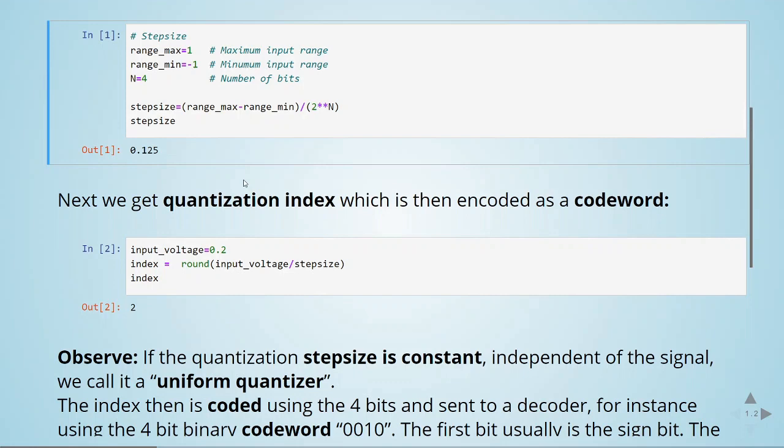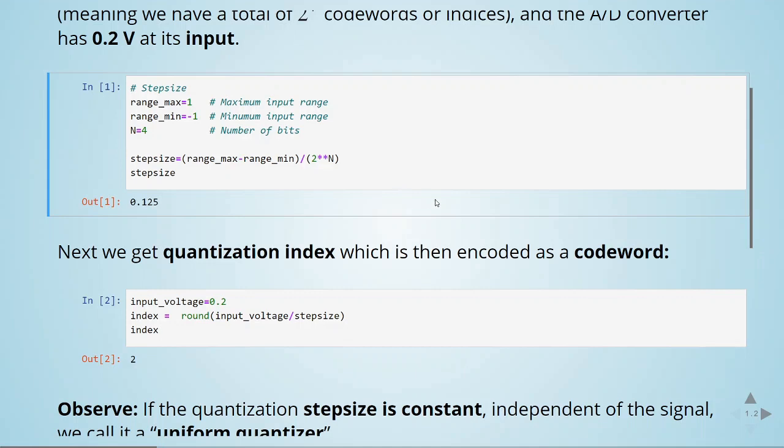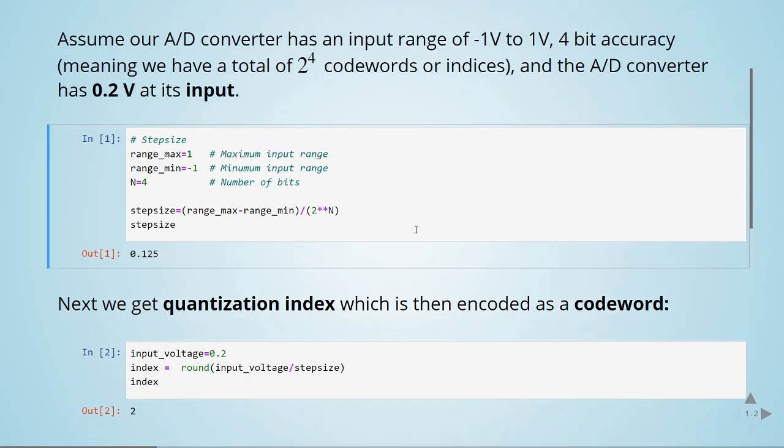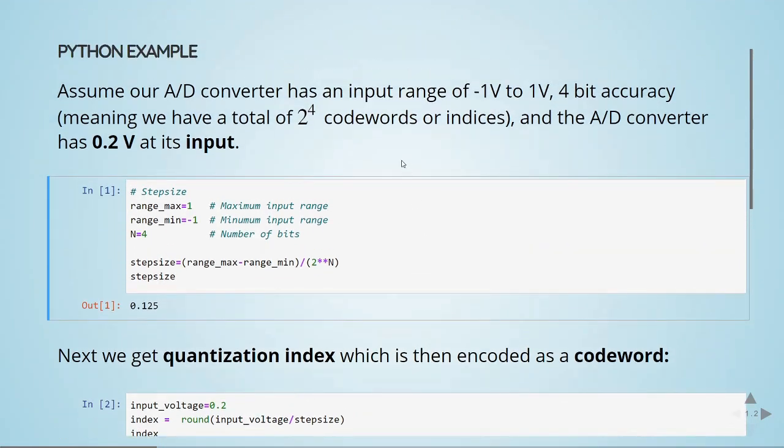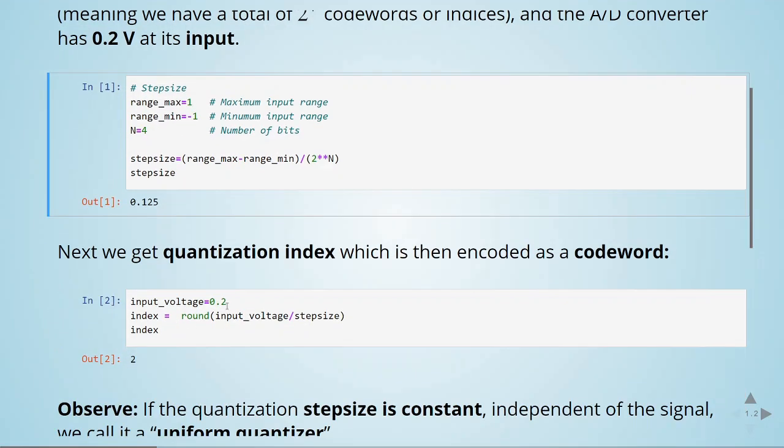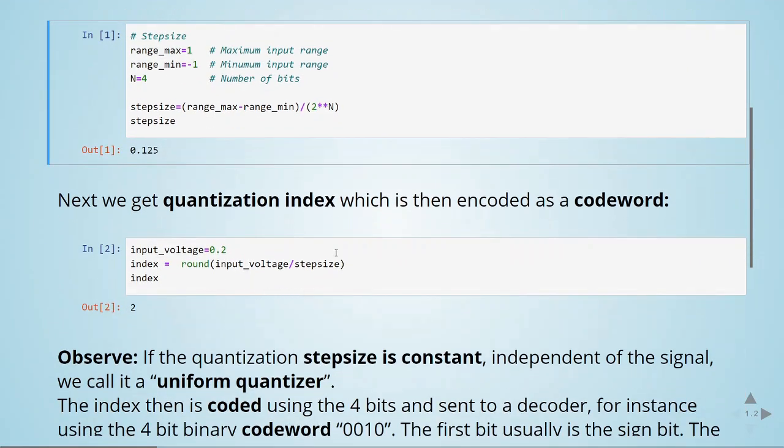From the step size we get now a quantization index that is later encoded as a code word. When our input voltage is 0.2 volts, we will apply this rounding of the input voltage divided by the step size that will give us an index. In this case, index is equal to 2.